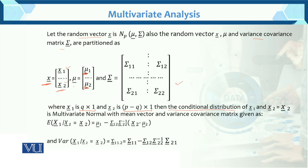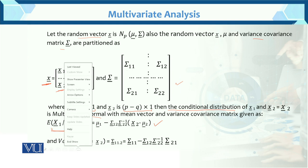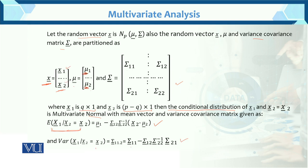Then the conditional distribution of x1 given x2 is multivariate normal with a certain mean vector and variance-covariance matrix. Here is the conditional mean of x1 given x2. And the variance of the conditional distribution x1 given x2 equals sigma 1,1 dot 2. This is the notation of the conditional variance-covariance matrix.